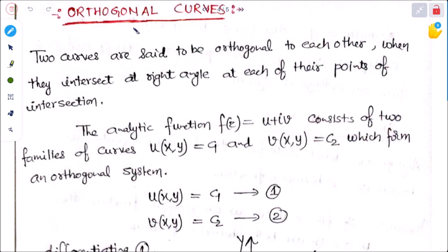Next topic is orthogonal curves. We have been studying orthogonal curves — curves that intercept each other at 90 degrees. The same concept applies here but in the complex plane. Two curves are said to be orthogonal to each other when they intersect at right angles at each of their points of intersection.